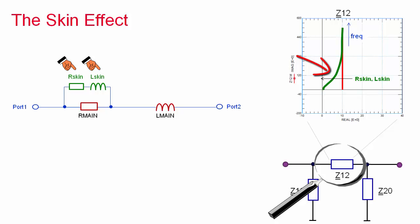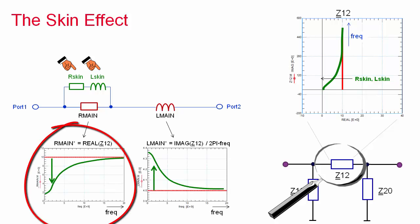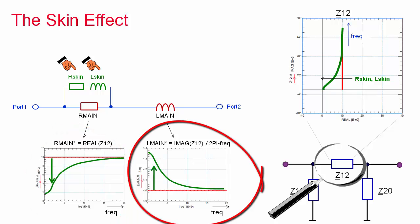The real part of Z12, interpreted as R-main star, clearly shows the change from low to higher resistance, while the imaginary part, interpreted as L-main star, shows a slight drop with increasing frequencies. This ends the raw modeling of the port 1 to port 2 transmission properties.